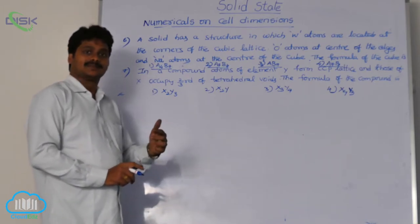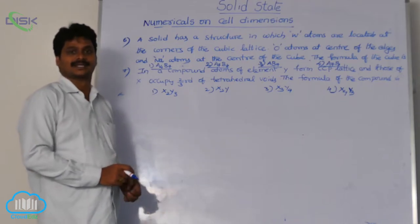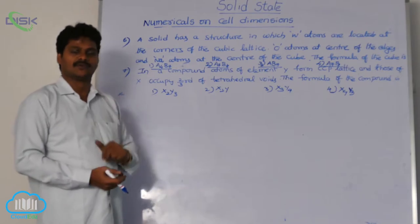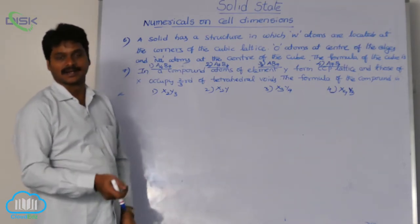You know, always atoms at the corners only contribute 1 by 8 per unit cell. At face center, 1 by 2. At edge center, 1 by 4. At voids, complete atoms. At body center also, complete atoms.